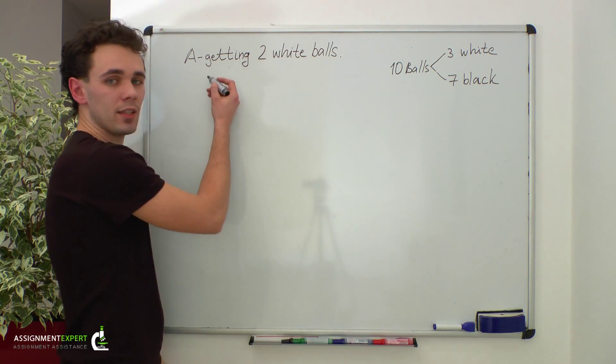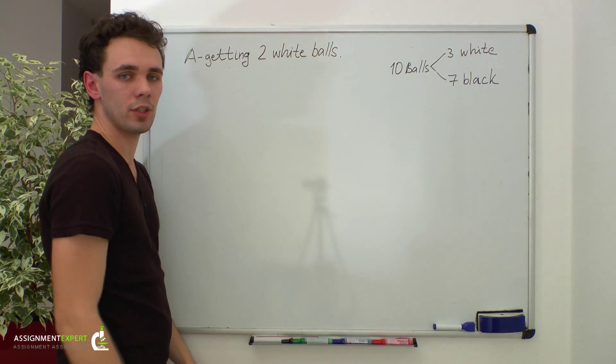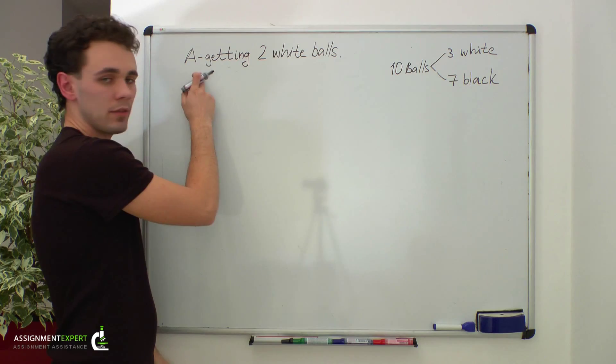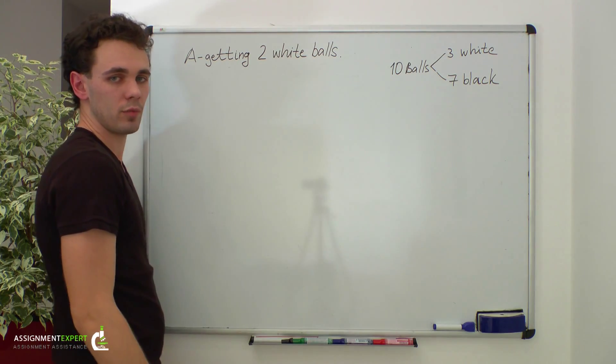The event of interest here, A, is getting two white balls out of the urn. The probability of this event can be calculated using the classical definition of probability.